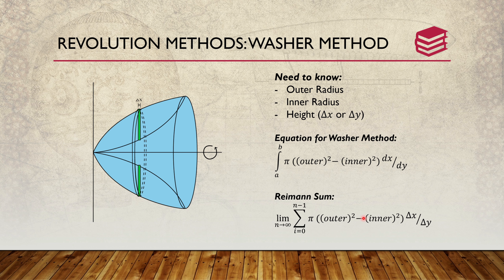The next method is the washer method. It is called the washer method because if you have two curves, you're going to have two areas separating, and they will form a washer when revolved around a particular axis. You need to know the outer radius and the inner radius, and the height, which is either delta x or delta y. The equation is π(R² - r²), where R is the outer radius and r is the inner radius, and depending on orientation it's dx or dy. Your Riemann sum is set up with this limit.